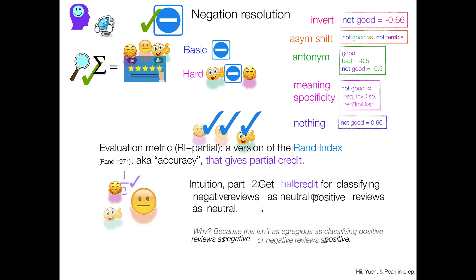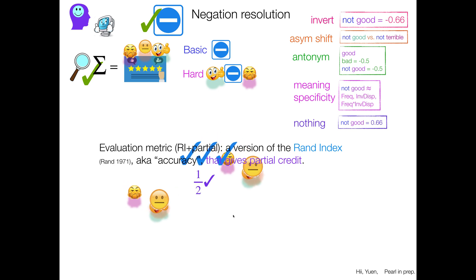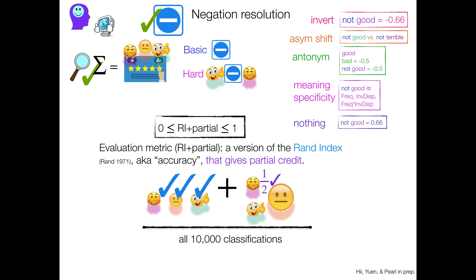The second part is the partial credit part. We're going to give you half credit for classifying negative reviews as neutral or positive reviews as neutral, instead of completely getting it wrong and just swapping the sentiment entirely. And the reason we did this is we thought it's not as egregious an error as classifying positive reviews as negative or negative reviews as positive. You got part way there. You didn't completely mess it up. So we're going to give you partial credit for that. Therefore, the evaluation metric is the combination of both the full credit and the partial credit divided by all 10,000 classifications that you made.